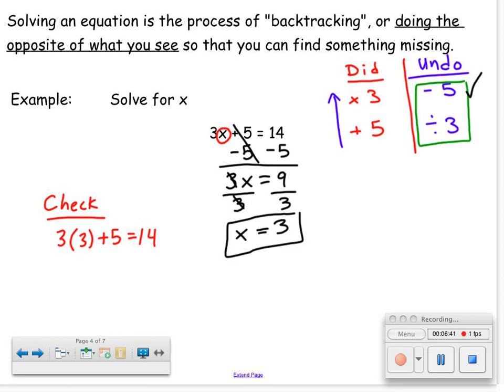Well, order of operations tells me to multiply before I add. So I do 3 times 3 and get 9. And then 9 plus 5 gives me 14. If the two sides balance out, then you know you did the equation correctly, and you can confirm your answer is right.